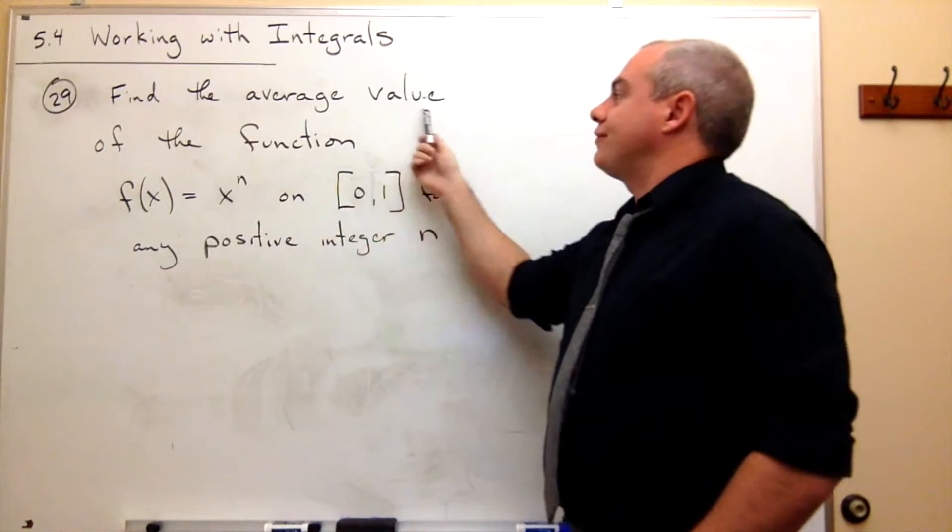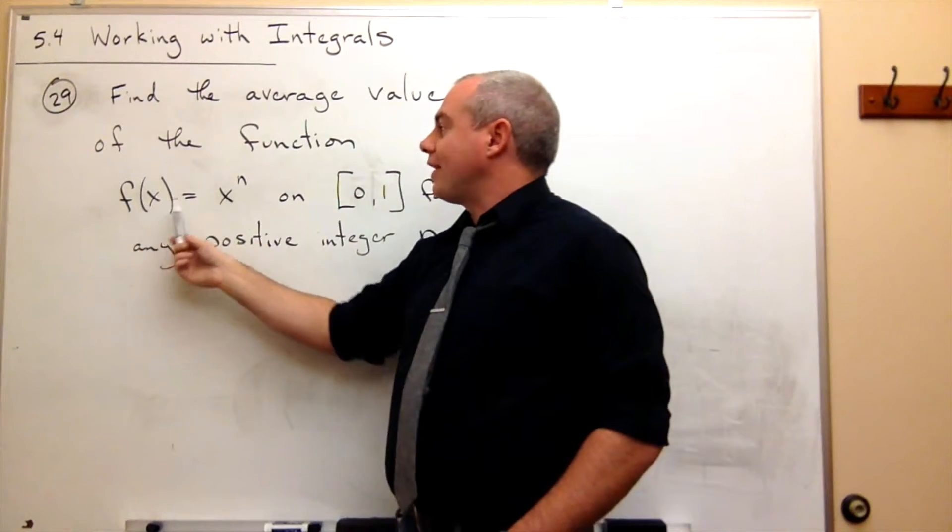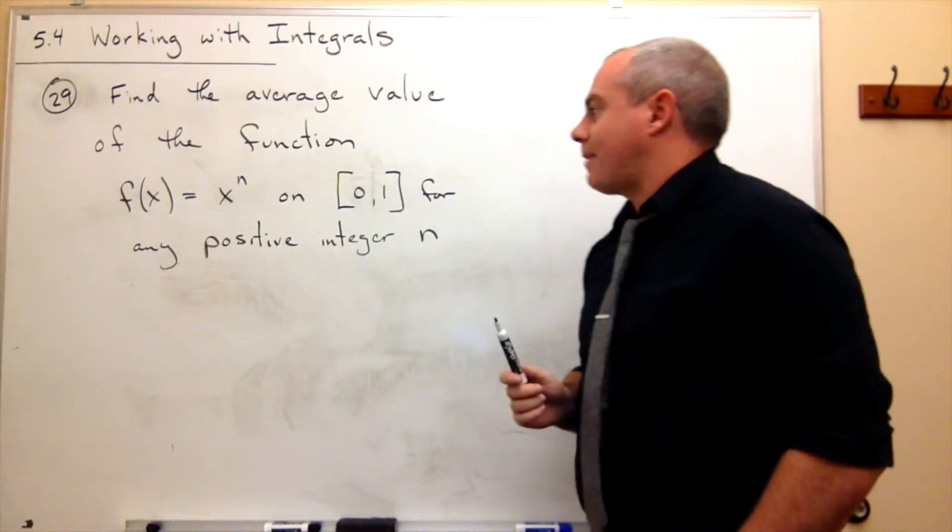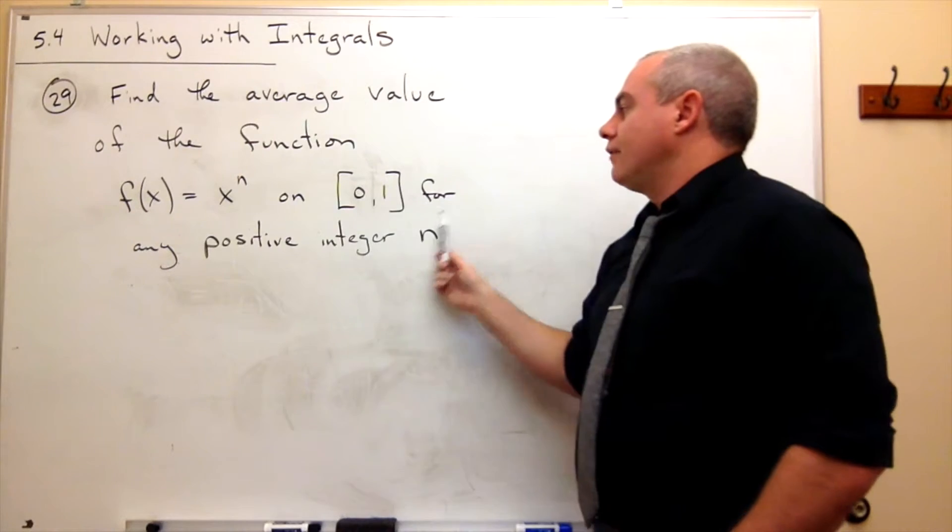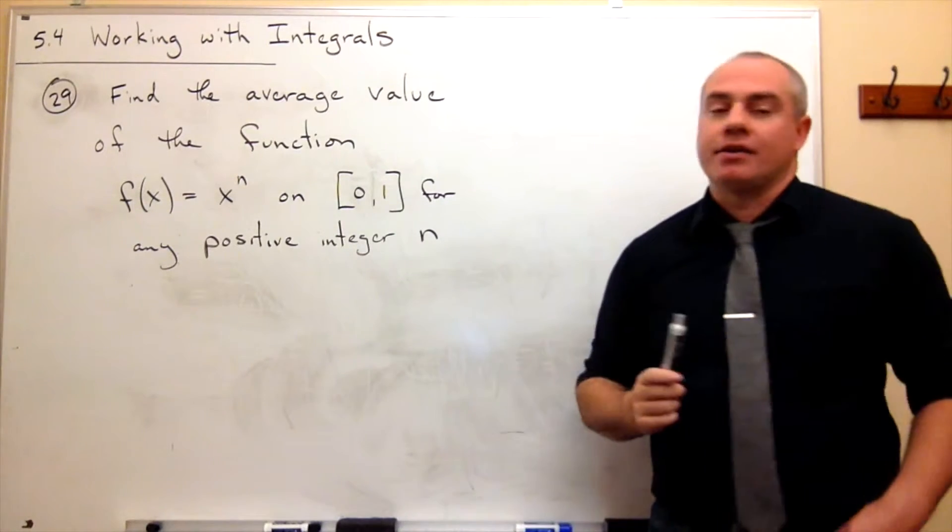I'd like to find the average value of the function f of x equals x to the nth power on the interval 0 to 1 for any positive integer n.